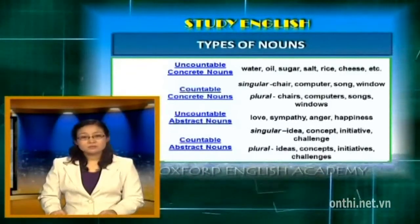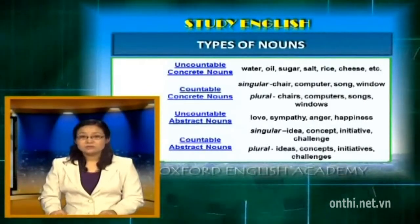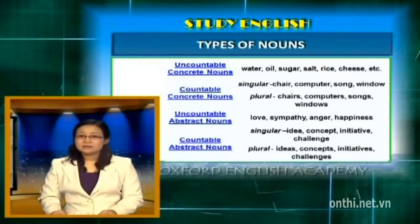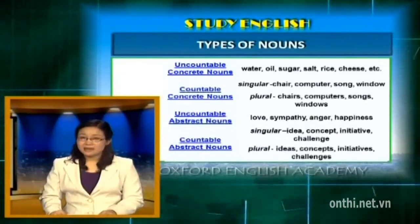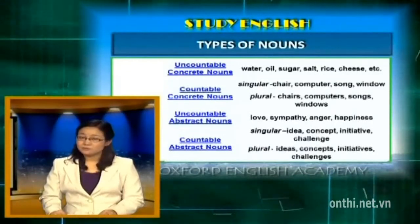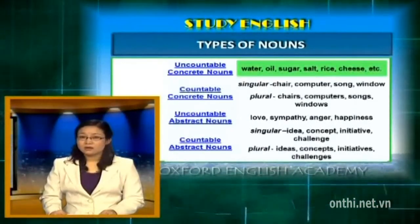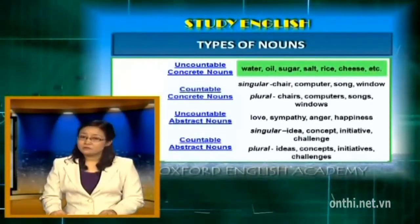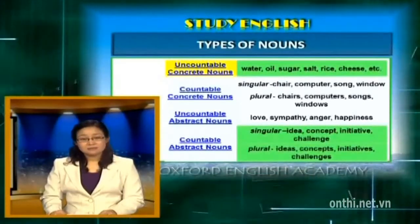Quý vị và các em thân mến, khi sử dụng danh từ tiếng Anh, chúng ta cần chú ý một số điểm như sau. Thứ nhất, quan niệm cho rằng các danh từ chỉ sự vật vật chất cụ thể (concrete nouns) thường là danh từ đếm được, và các danh từ trừu tượng (abstract nouns) thường là không đếm được, là sai. Nhiều danh từ chỉ sự vật vật chất cụ thể như water, salt, sugar lại là danh từ không đếm được. Và nhiều danh từ trừu tượng như concept lại là danh từ đếm được.